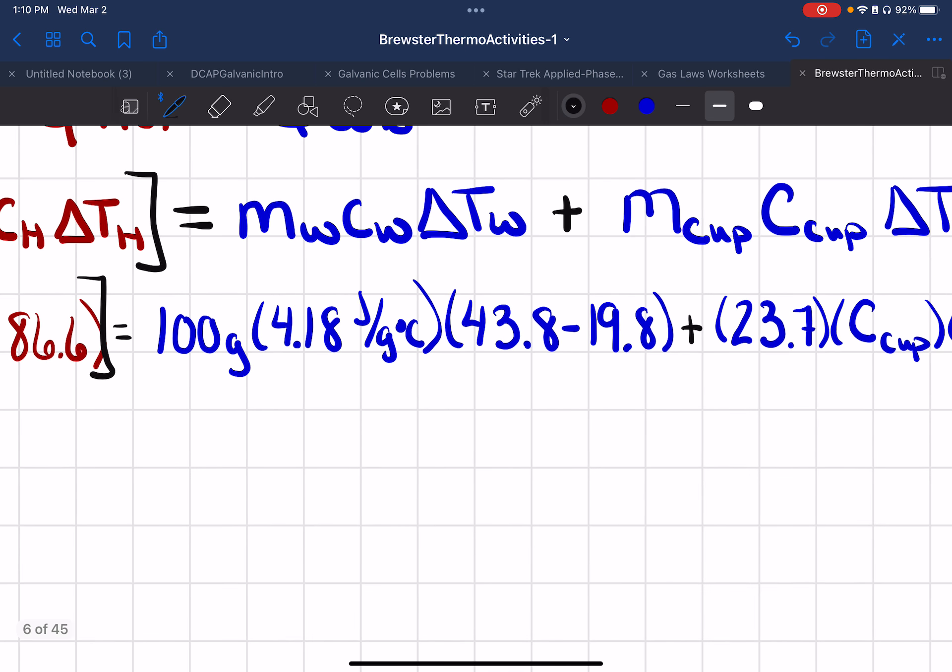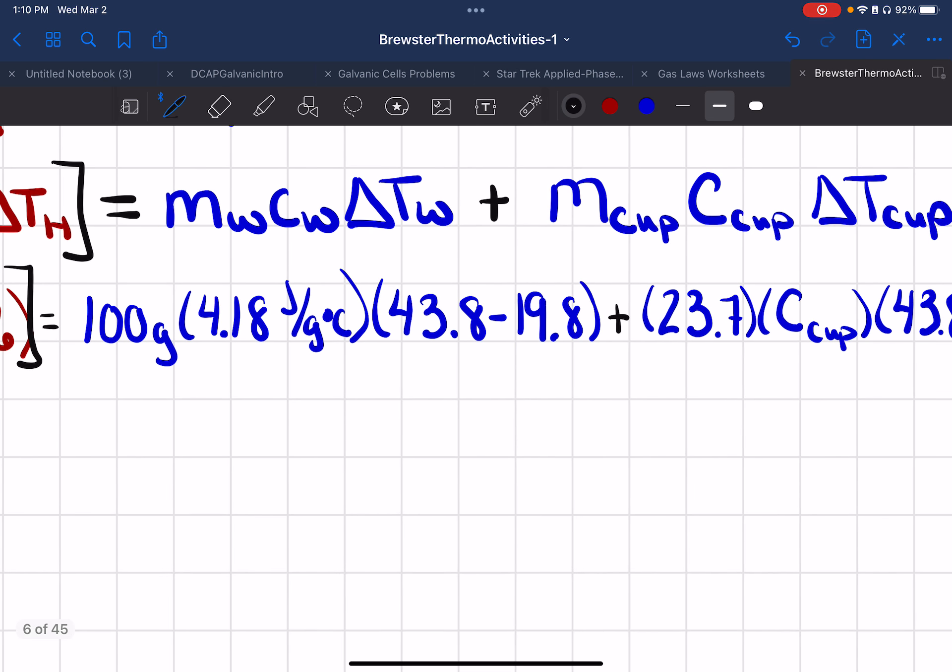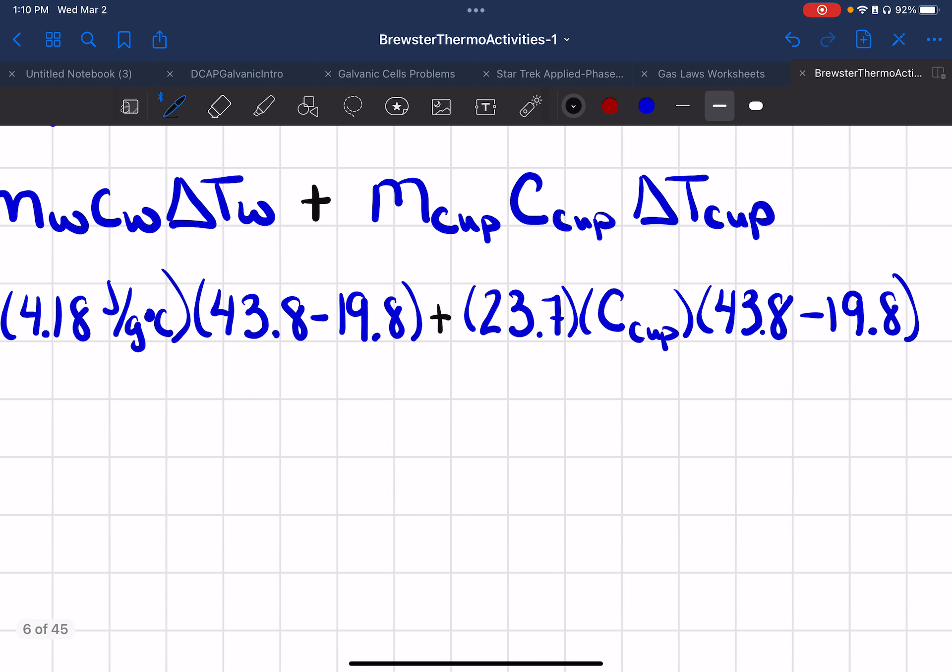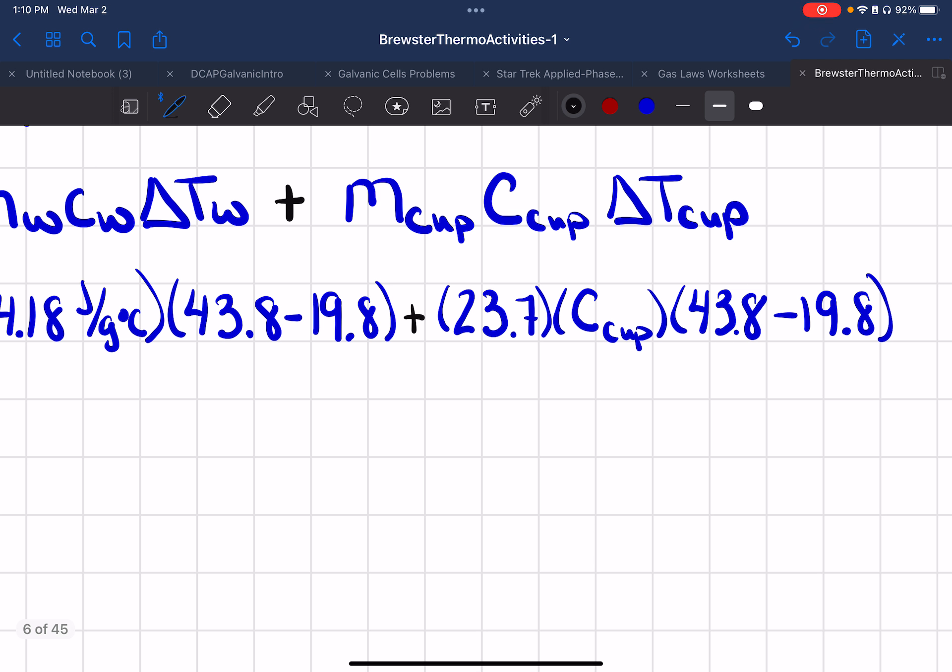On this side over here, I have the water, which is 100 grams times 4.18 times 43.8 minus 19.8. And one of the temperature changes for the water is also the temperature change for the cup. So we have 23.7 times C of the cup times 43.8. And if you prefer to put an X down for the C of cup, you sure can.